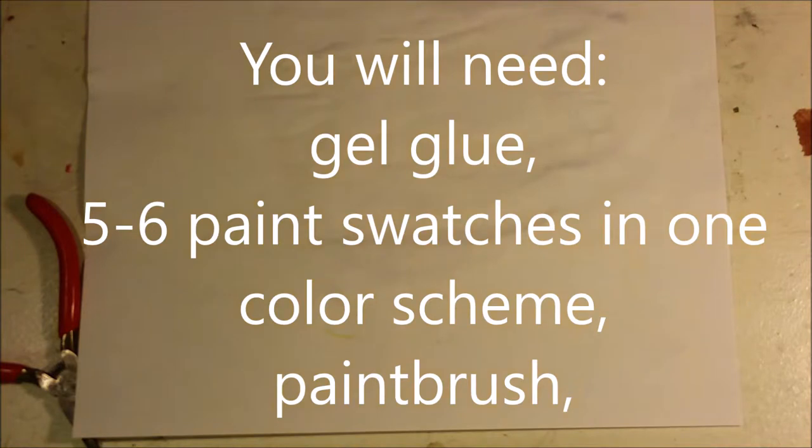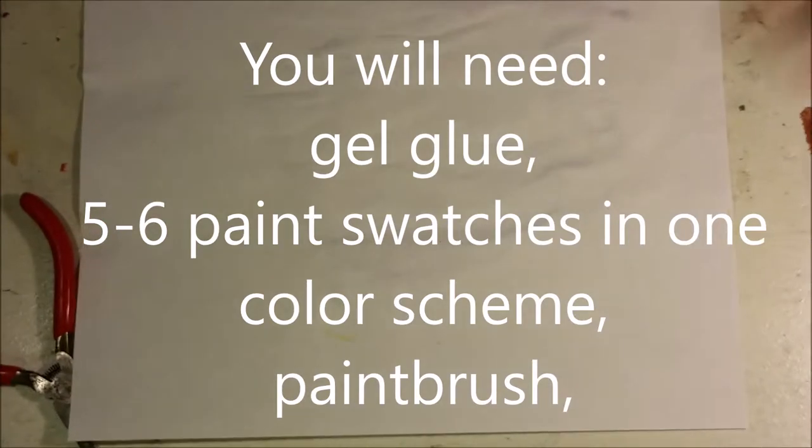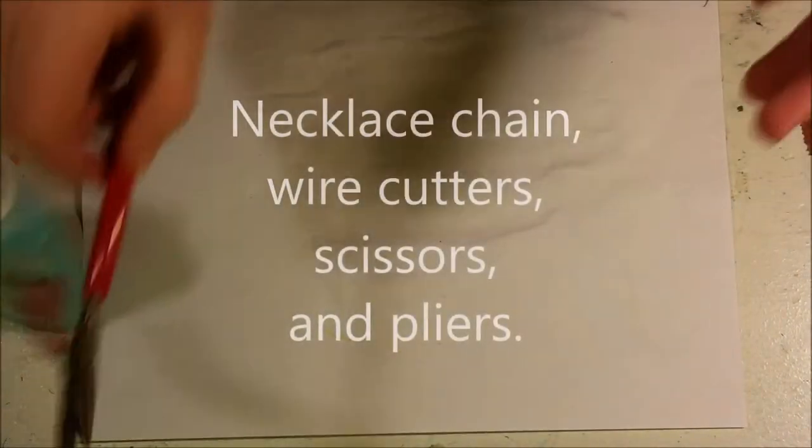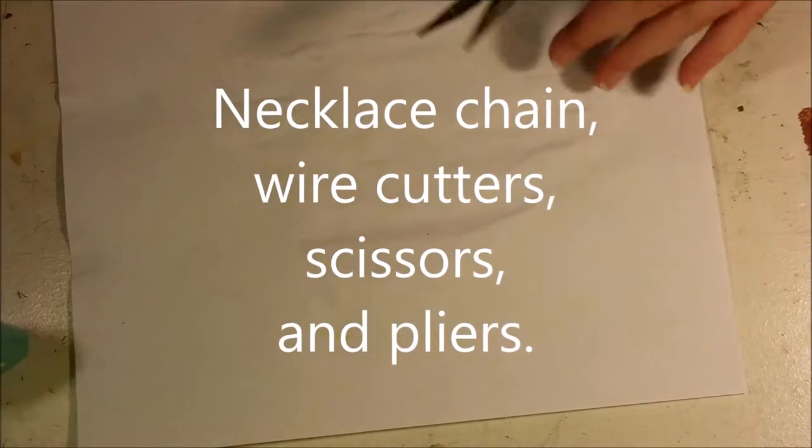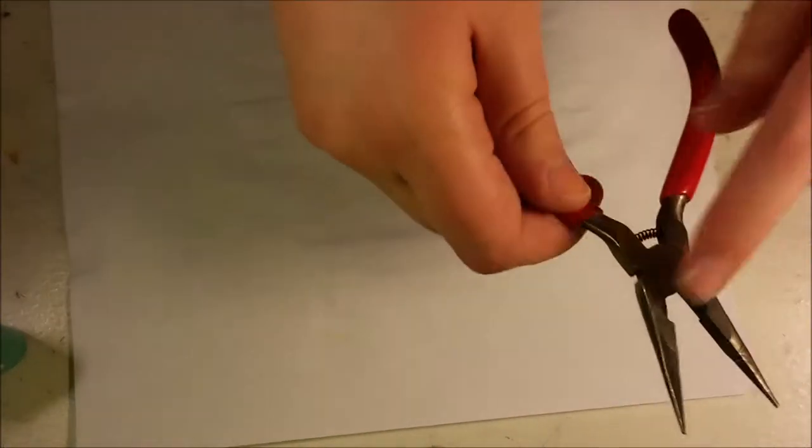It is Awesome Sauciness the Third here, bringing you a DIY chevron necklace. The first thing you will need is paint swatches in six different shades, or however many you want, wire cutters and pliers. For wire cutters, you could just use scissors, of course. You'll also need some necklace chain.